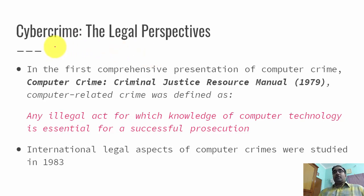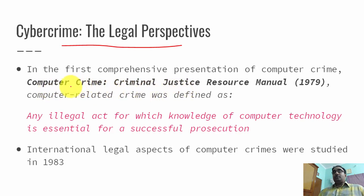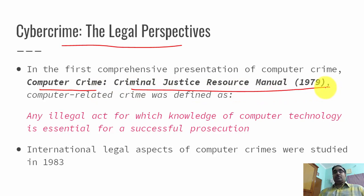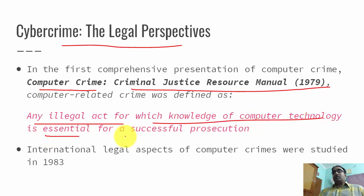So first let's look at cyber crime from the legal perspectives. This is historical data — very old things. The first comprehensive presentation of computer crime is titled as 'Computer Crime: Criminal Justice Resource Manual', published in the year 1979. In that document they defined computer crime as any illegal act for which knowledge of computer technology is essential for a successful prosecution. Basically it boils down to doing bad or illegal things using computer technology.